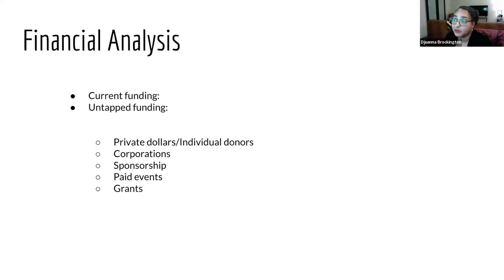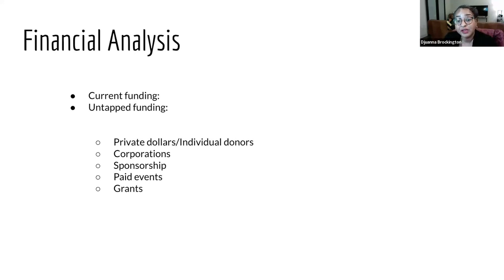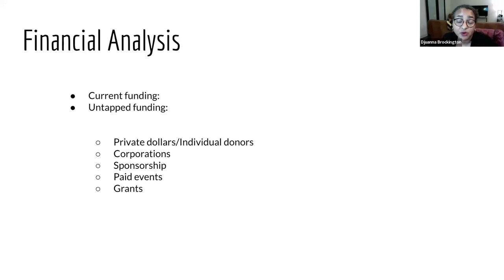Back to money — you need to understand your current funding and your untapped funding. Look at your regular funding revenue, where most of your revenue comes from, what's not so great and how you can improve. How can you bring corporate dollars up, get more sponsorships, figure out the right price for a paid event, or apply for NEA grants? Partner with other organizations. Create a funding analysis and review it once a year so you know where you stand financially.